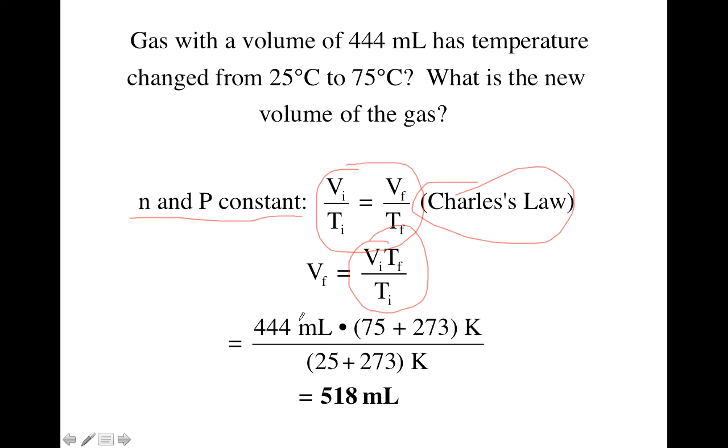So let's go up to the original question and start plugging in numbers. The initial volume, 444 milliliters. The final temperature, we need to change to Kelvin, so 75 plus 273. And our initial temperature, 25 Celsius, we're going to add 273 to bring it to Kelvin.